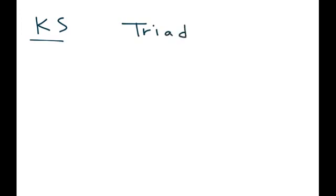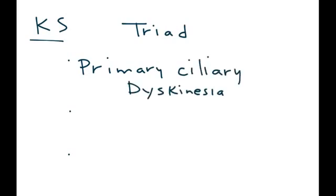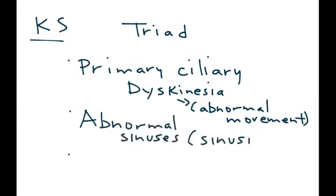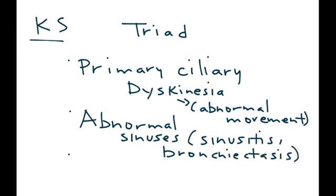Kartagener Syndrome can appear in a patient as a triad — three very important findings. The first is what we just discussed: the cilia are essentially immotile, and this is given the term Primary Ciliary Dyskinesia. Dyskinesia means abnormal movement. The second part of the triad involves abnormal sinuses such as sinusitis and bronchiectasis, referring to the airway buildup of mucus and bacteria leading to respiratory infections.